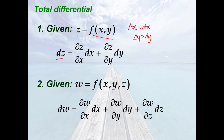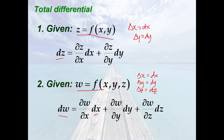We extend this idea to functions of three variables. Let w equal f of x, y, z, and let delta x equal dx, delta y equal dy, and delta z equal dz represent changes in x, y, and z respectively. Then the total differential of w, denoted dw, is equal to the partial of w with respect to x times dx, plus the partial of w with respect to y times dy, plus the partial of w with respect to z times dz.